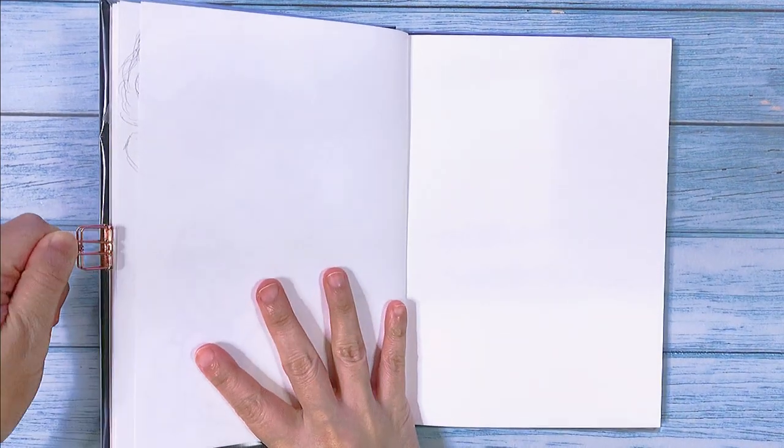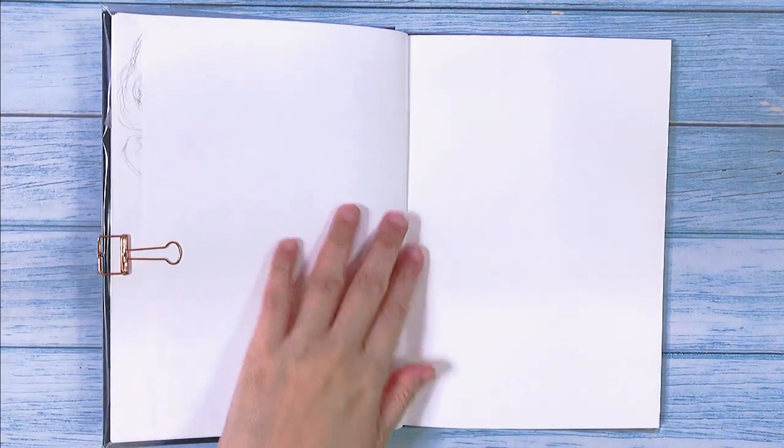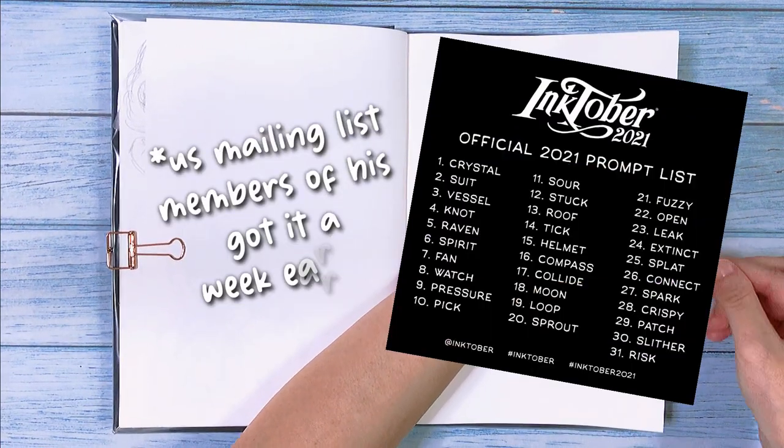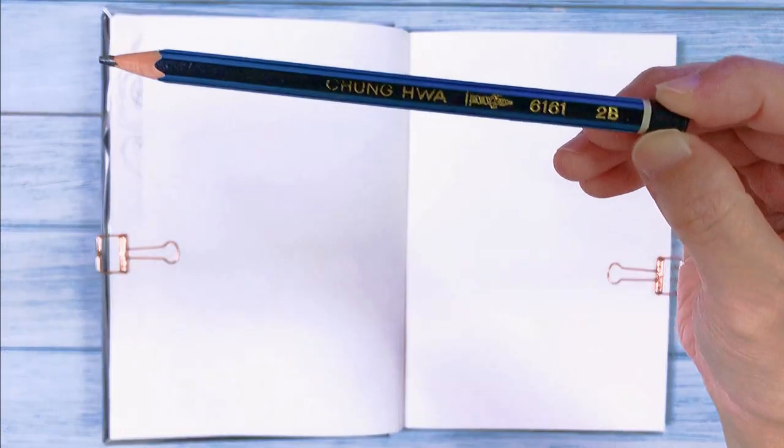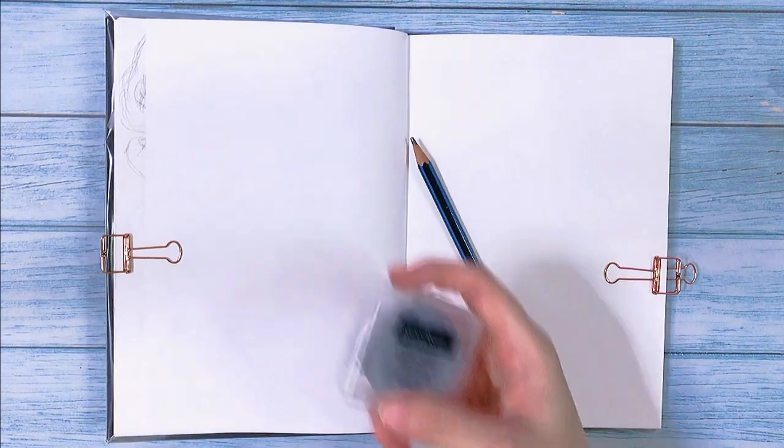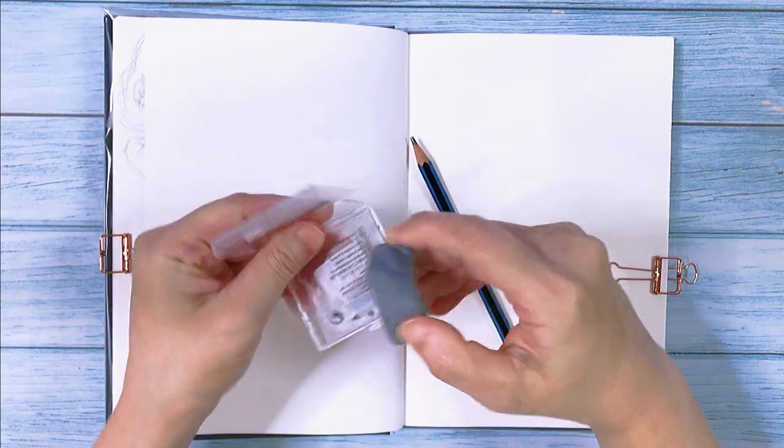It's Inktober season soon and I now plan to design an OC for my prompt drawings later. The prompt list was just released recently by Jake Parker. I always prefer drawing with a traditional wooden pencil with a slightly blunt point. And here's my trusty kneaded eraser, always cased up.